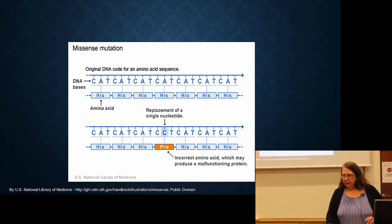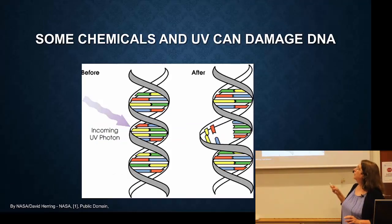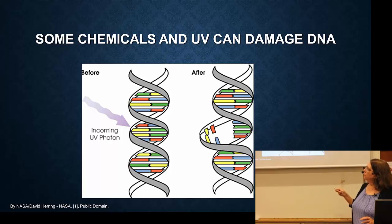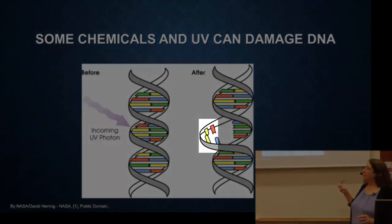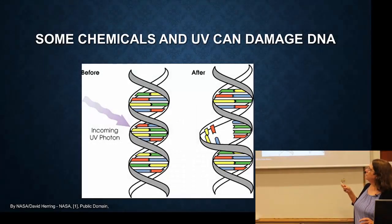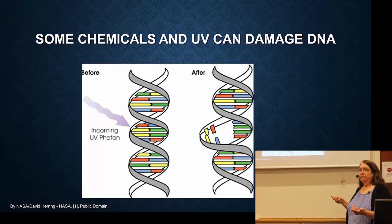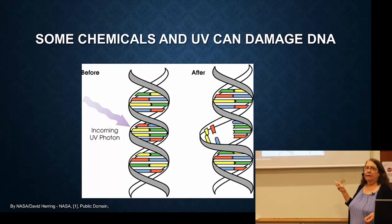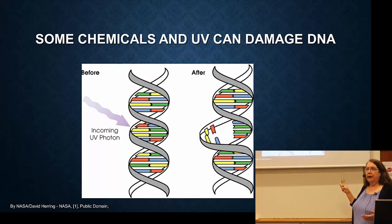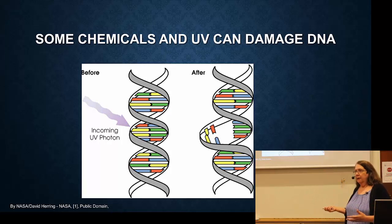This can happen during replication, but it can also happen through chemicals or UV damage. Ultraviolet light can attack DNA and form dimers — for example, thymine dimers between two T's. This is why UV damage is dangerous to bacteria and to people. When the cell goes to replicate this, it has this big mess and often doesn't quite know what to do. It will make mistakes in replicating that DNA. There are repair enzymes that try to fix it, but they can make mistakes as well.